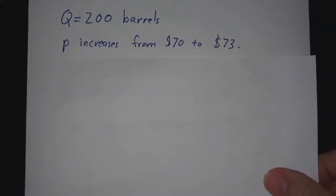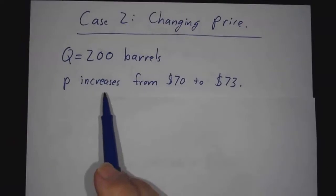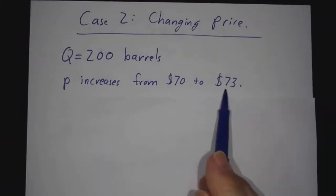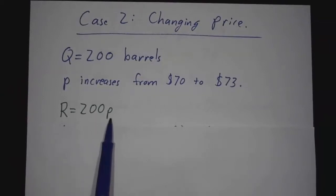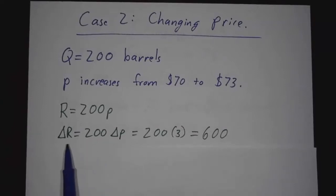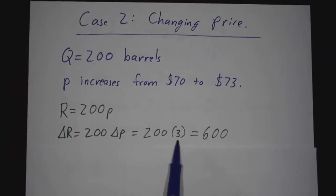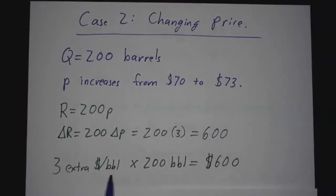What if instead we kept the number of barrels constant but increased the price? The price went from 70 to 73. The revenue is 200 barrels times whatever the price is. The change in revenue is 200 times the change in price — 200 times 3 — that's $600. Also pretty easy.